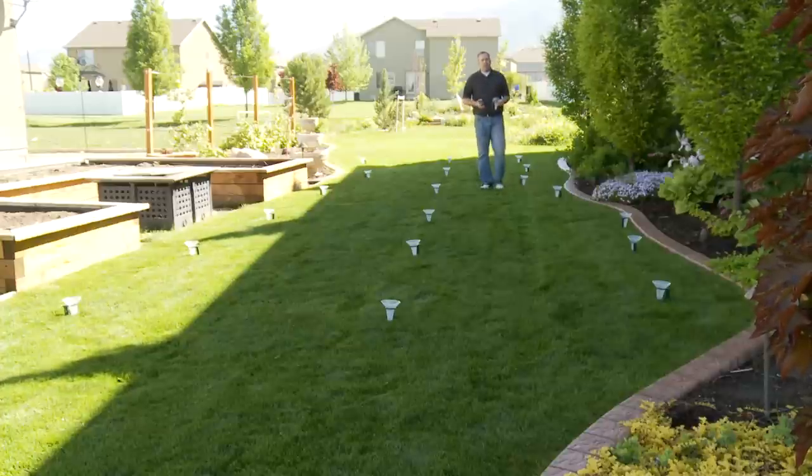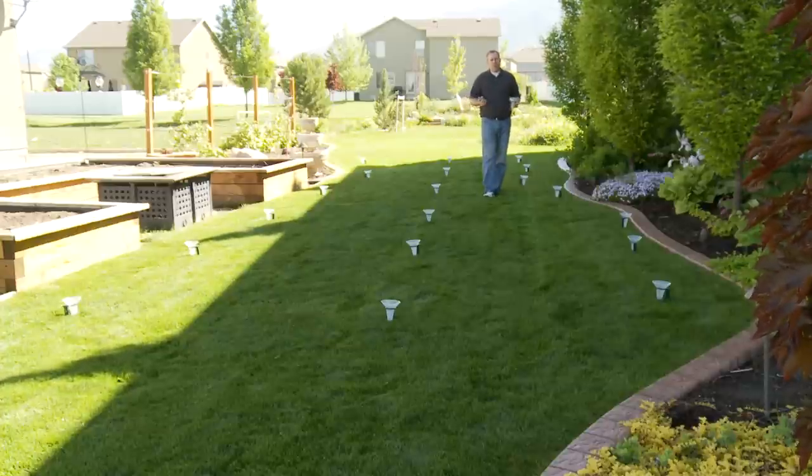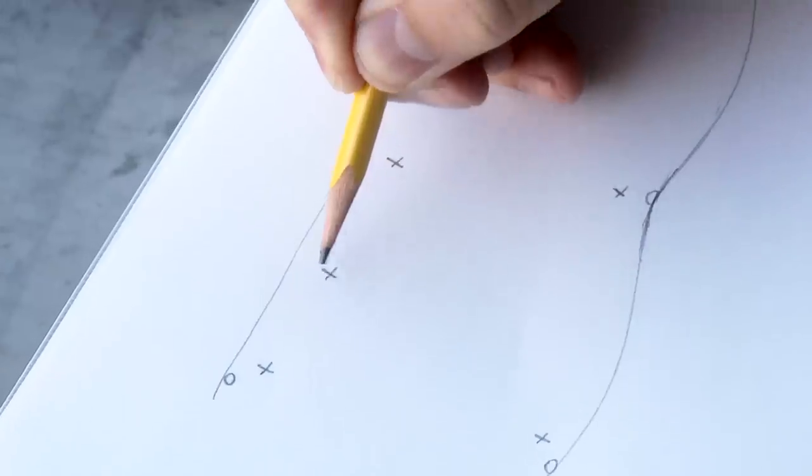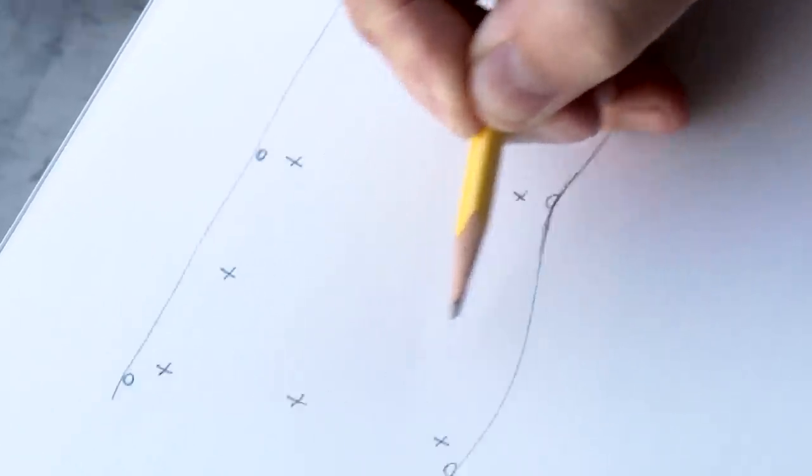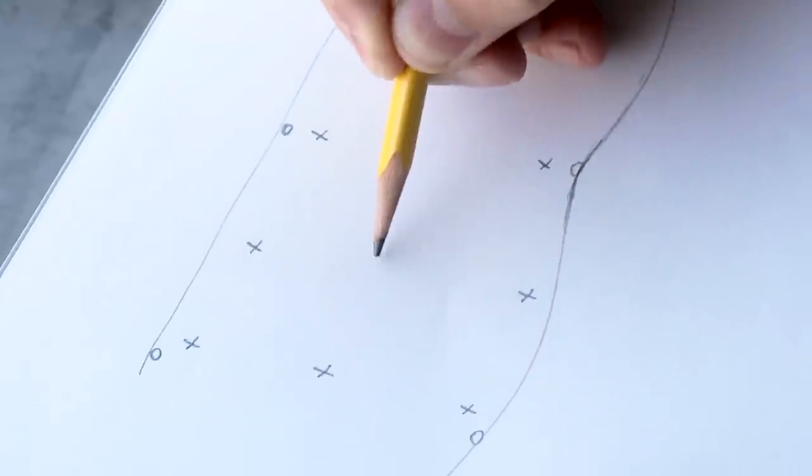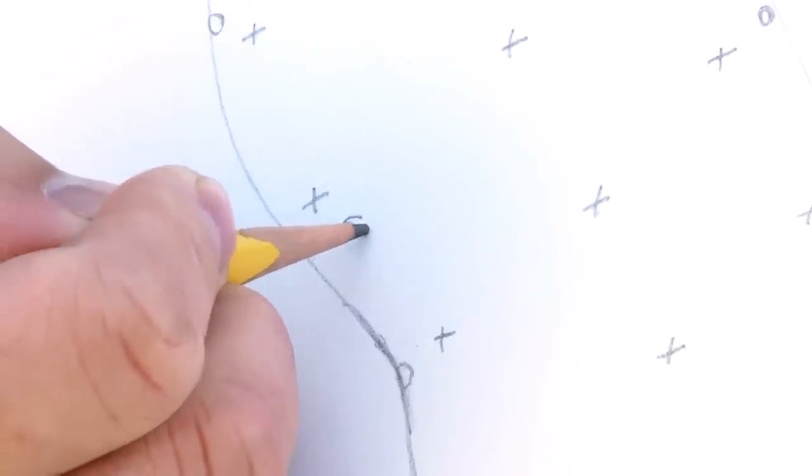After you've got your catch cups laid out, you'll want to get a piece of paper and mark on that piece of paper where the catch cups are located. When you go back through and check the volume of water in each cup, you can then write it next to the location on the piece of paper.